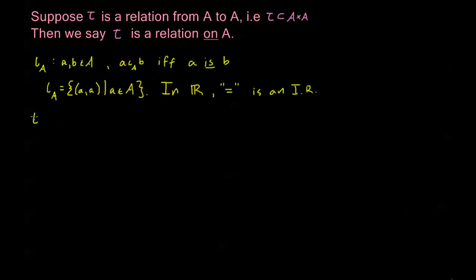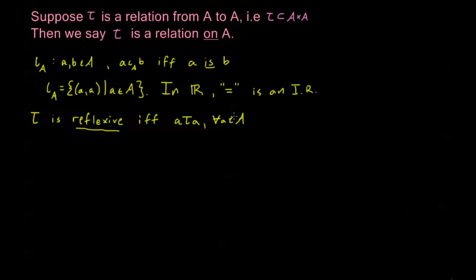Talking about tau as just some arbitrary relation on A, we say tau is reflexive if and only if A tau A for every A in the set A. In other words, a relation is called reflexive if the relation is always satisfied for two elements that are the same. Equals is of course a reflexive relation. Less than or equal to is also a reflexive relation — for example, five is less than or equal to five, and for any number it's going to be less than or equal to itself.